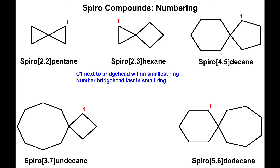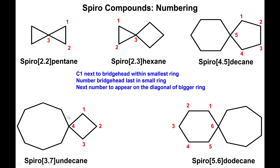After placing carbon 1, we continue numbering the small ring in such a way that we leave the bridgehead until the end. This means we choose the direction — clockwise or counterclockwise — that reaches the bridgehead last. For example, in one molecule we go counterclockwise to reach the bridgehead last; in another we go counterclockwise; in another clockwise; in another clockwise; and in the last example, counterclockwise. We label the bridgehead with its proper number, then begin labeling the bigger ring, following the same trajectory as the penultimate number and the bridgehead.